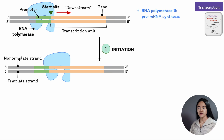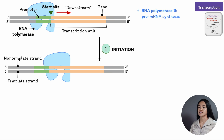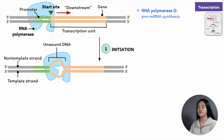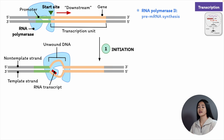Before RNA synthesis can begin, eukaryotic polymerases need assistance. They require a large set of accessory proteins called transcription factors. These proteins assemble on the promoter and help guide the binding of RNA polymerase — they position the RNA polymerase and unwind the DNA double helix to expose the template strand so RNA polymerase can begin transcription. This whole complex of transcription factors and RNA polymerase bound to the promoter is called a transcription initiation complex.